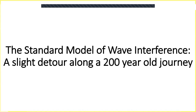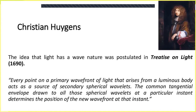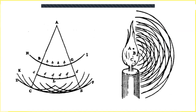I think the best place to begin is with a little bit of history. The theory of wave interference — the idea that light is made up of waves — started with Christiaan Huygens, a Dutch mathematician who lived in the 17th century. In 1690, he proposed that light propagates in the form of waves, and every point on the wavefront acts as a source of a new wavefront.